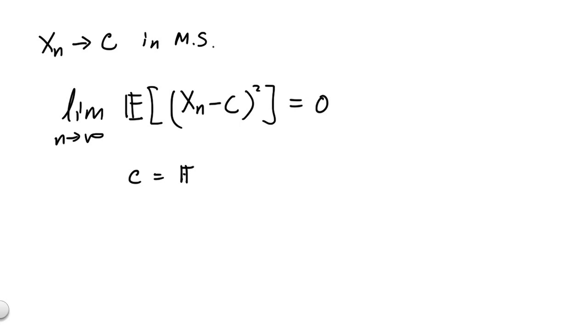We say that xn converges to a number c in mean squared if, as we take n go to infinity, the expected value of xn minus c squared goes to 0. To get a sense of what this looks like, let's say we let c equal to the expected value of xn. And let's say the expected value of xn is always the same. So the sequence of random variables has the same mean.